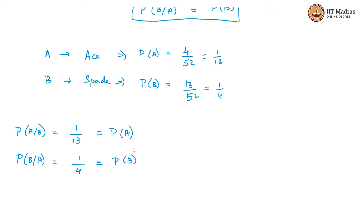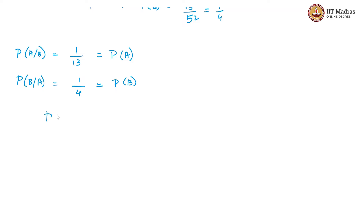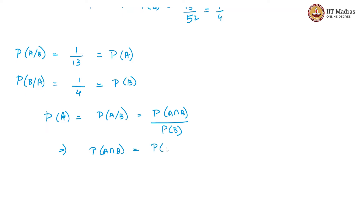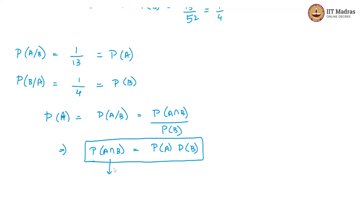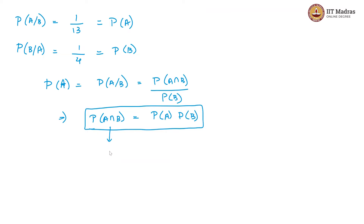The condition for independence is satisfied. We can further simplify this by saying that since P of A equals P of A given B, which is P of A intersection B divided by P of B, the condition can be simply written as P of A intersection B equals the product of P of A and P of B. P of A intersection B is 1 by 52 — there is only one ace of spades — and P of A is 1 by 13, P of B is 1 by 4, so their product is 1 by 52.